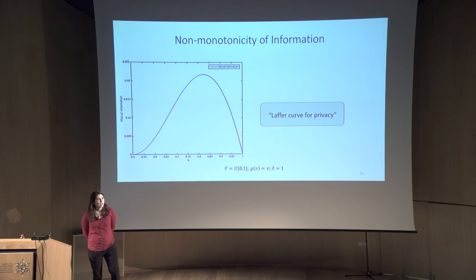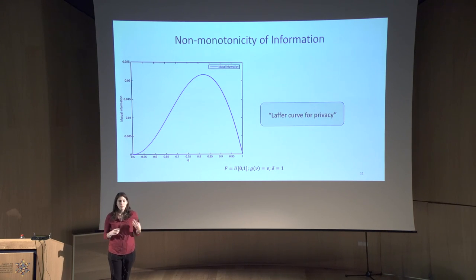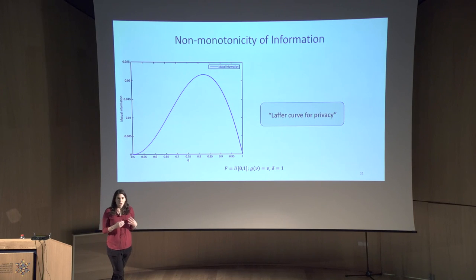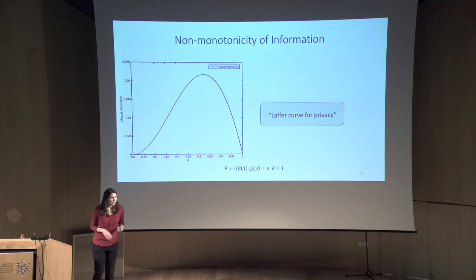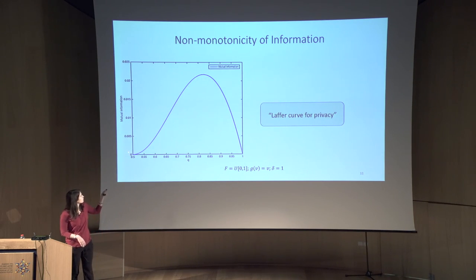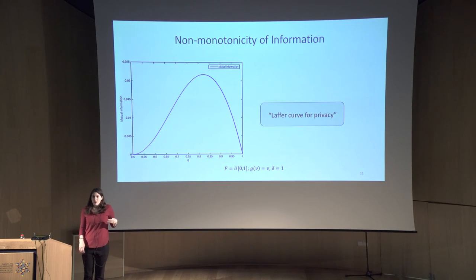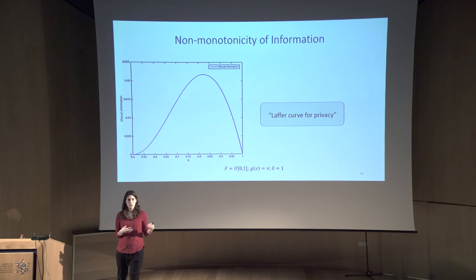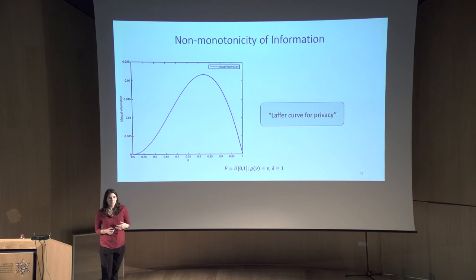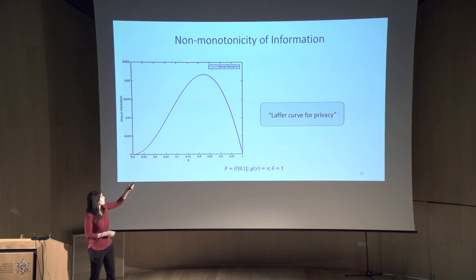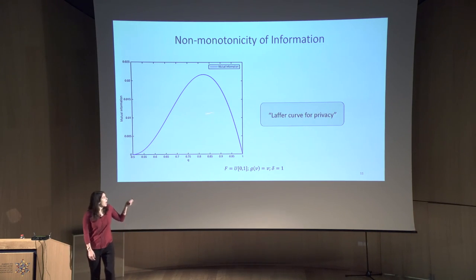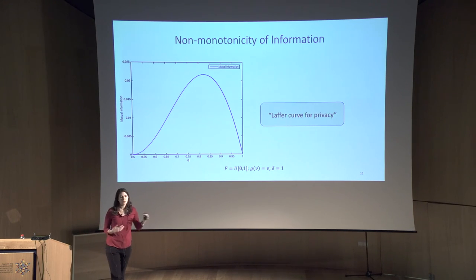This looks like the thought experiment macroeconomists have done about the optimal tax rate. If you want to maximize tax revenue, what's the right rate to set? At the extremes: if the tax rate is zero, you don't make any tax dollars; if the tax rate is one, you tax people's entire salary so they have no incentive to work — they modify their behavior to account for the changing policy. So if you want to actually maximize tax dollars, you want to pick some spot in the middle. This is really what we see here for privacy as well: there's a sweet spot in the middle, because people modify their behavior to account for the change in policy.